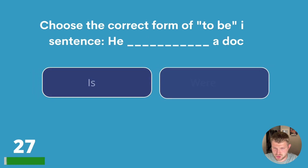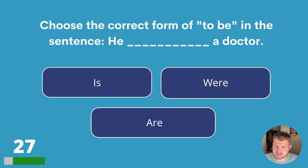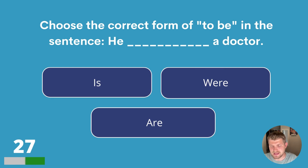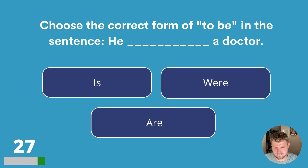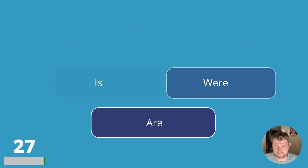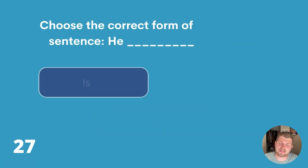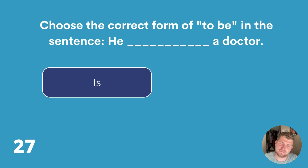Question twenty-seven. Choose the correct form of 'to be' in the sentence: he blank a doctor. Is it he is a doctor, he were a doctor or he are a doctor? The answer is is — he is a doctor.